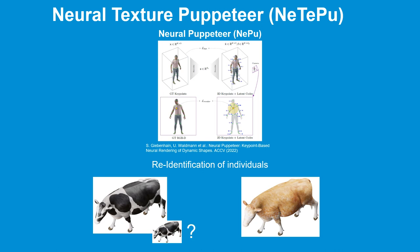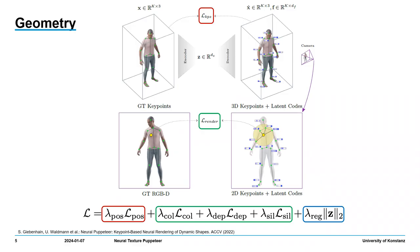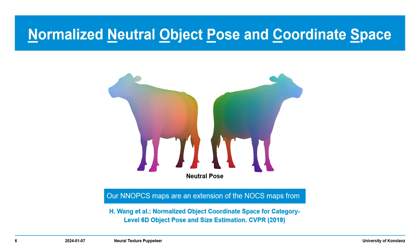We show that the new pipeline can be used in a downstream task to identify individuals. Neural Puppeteer renders color and depth maps and masks given 3D keypoints. Instead of rendering color maps, we render what we call NNO-PCS maps, which contain the geometric information about the object. NNO-PCS stands for Normalized Neutral Object Pose in Coordinate Space.